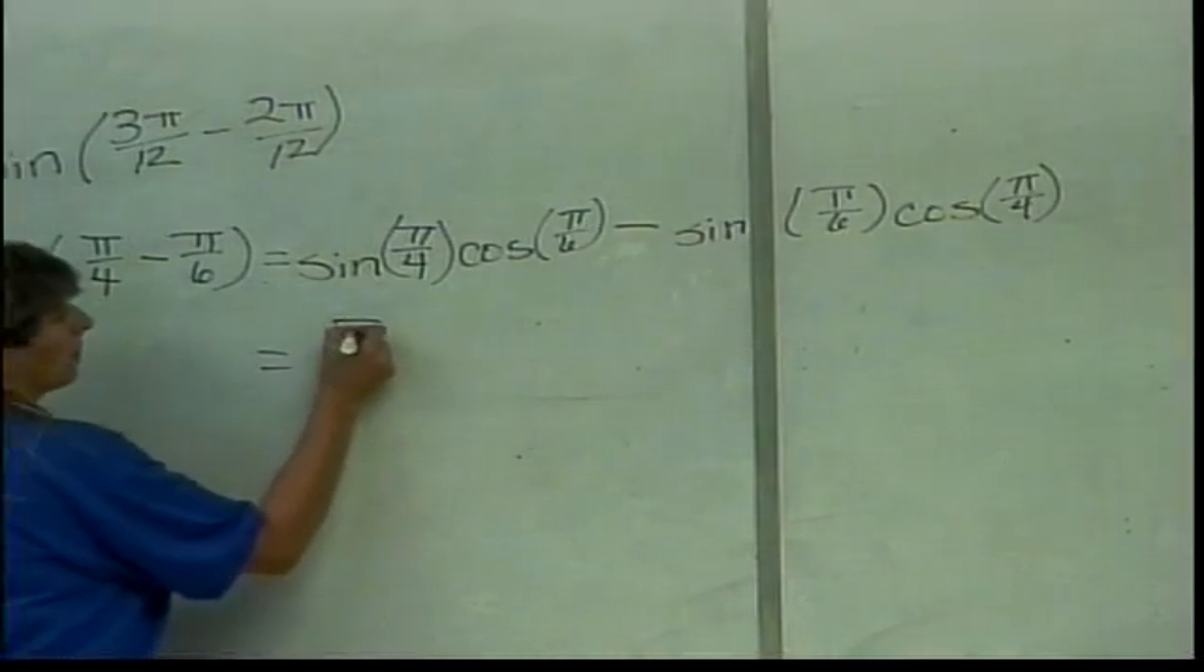Now, I know what the sine of pi over 4 is. Yes? You should. What is it? Radical 2 over 2. Radical 2 over 2. Notice that once I come up with this, the word sine is gone. What is the cosine of pi over 6? Square root of 3 over 2. Everybody okay with that one? Square root of 3 over 2? I think so. All right. Minus. What's the sine of pi over 6? One half. And what's the cosine of pi over 4? Square root of 2 over 2.